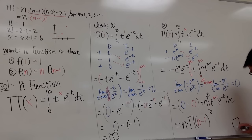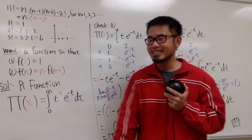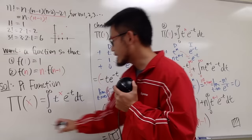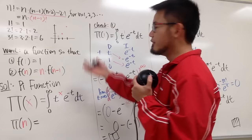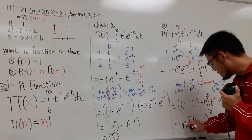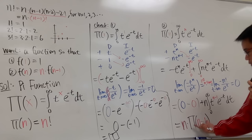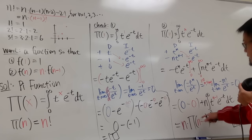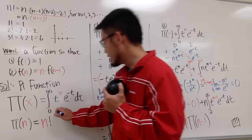So we can now conclude that the pi function satisfies Pi(n) = n factorial. When you plug in n, you get n times Pi(n minus 1), which expands out just like n factorial. This is much better than the gamma function, because you get precisely Pi(n) = n factorial.